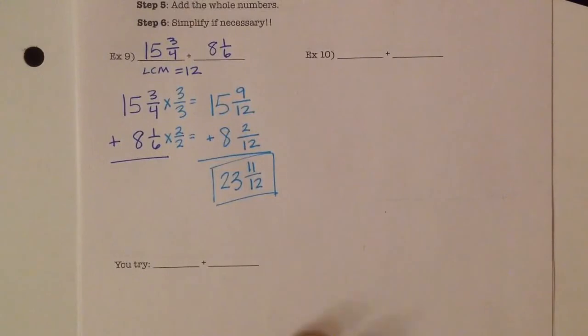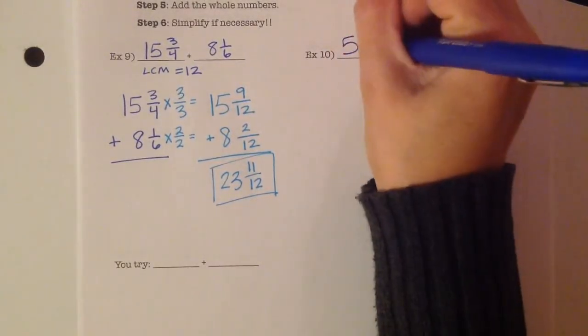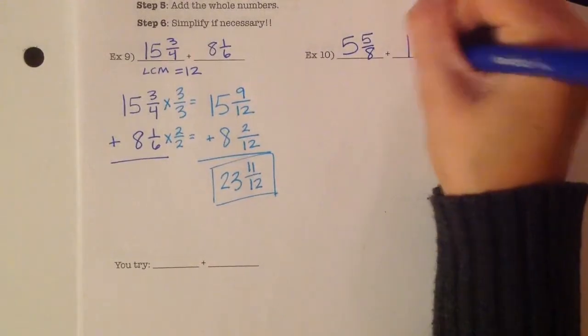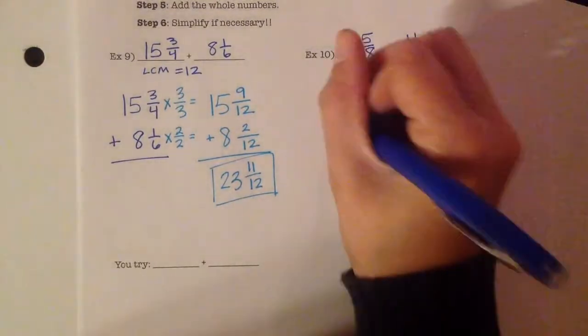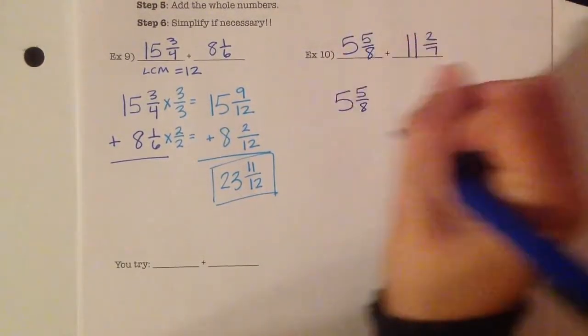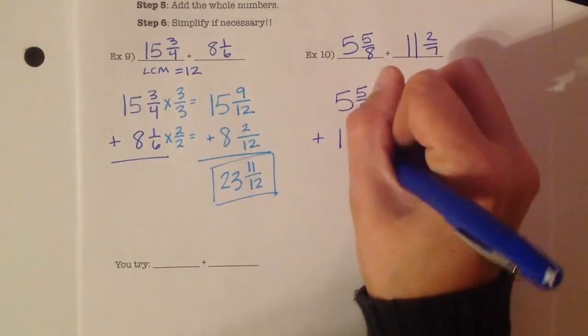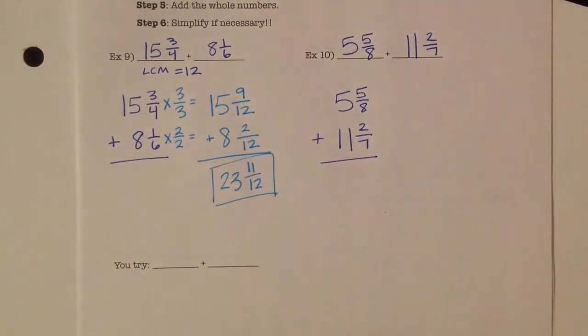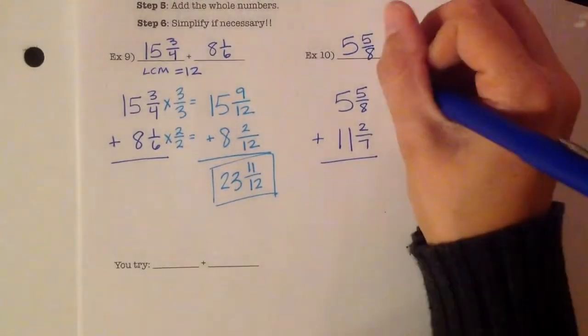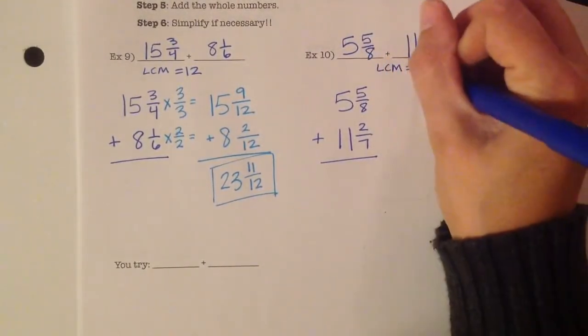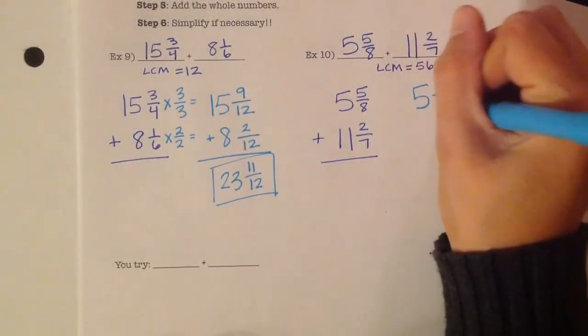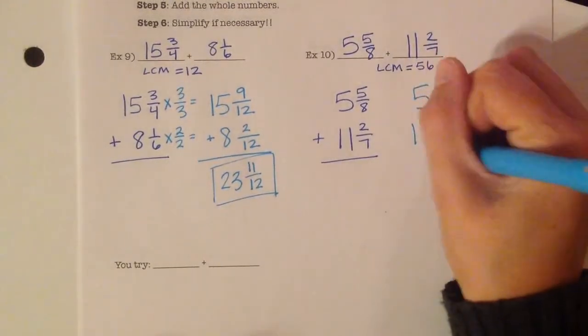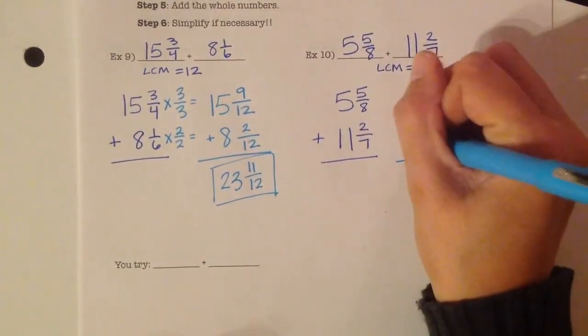Example number 2: We've got 5 and 5 eighths plus 11 and 2 sevenths. Again, I'm going to rewrite my problem vertically. I've got 5 and 5 eighths plus 11 and 2 sevenths. Then I'm looking for that least common denominator or that least common multiple. The first number, the lowest number that they both multiply into is 56. I'm going to rewrite those numbers with those common denominators. I keep the whole numbers the same, but the denominator is going to become 56.